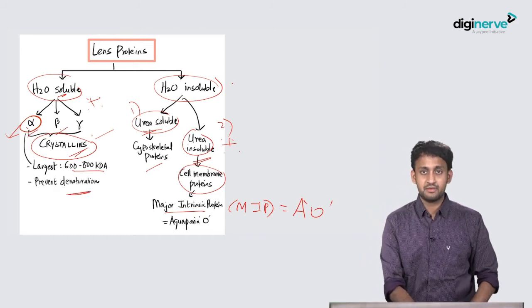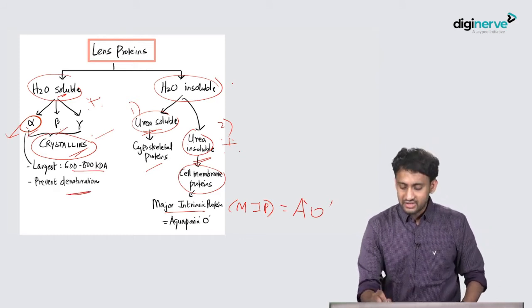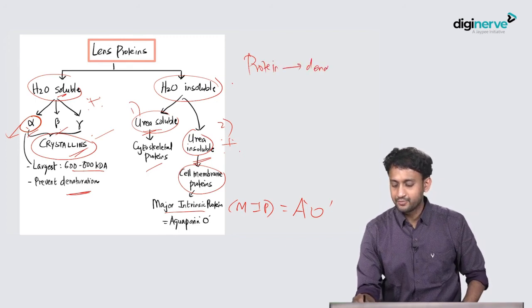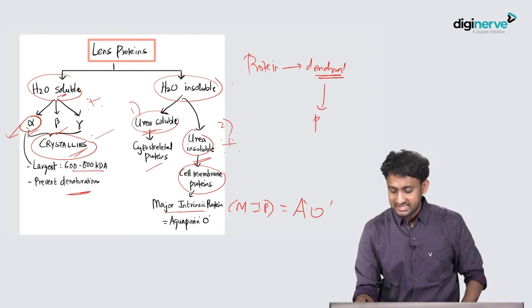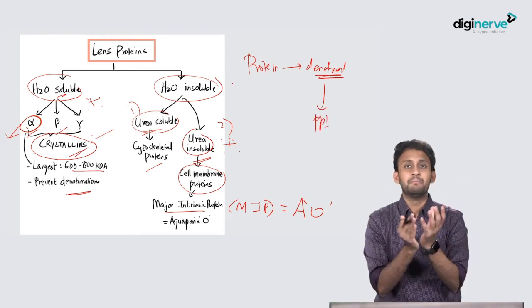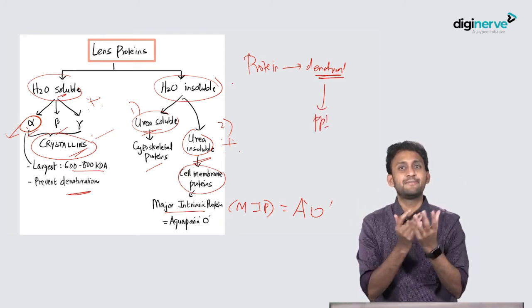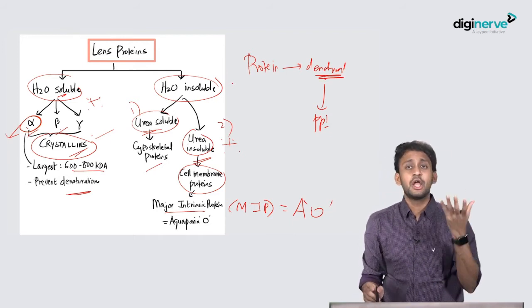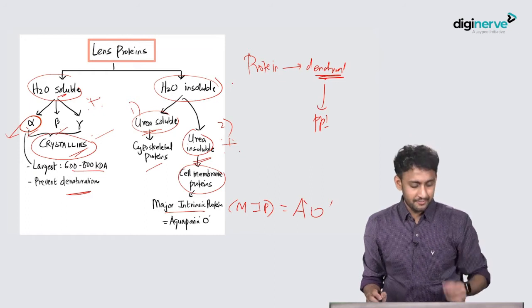When proteins are denaturated, they become precipitated. They form like a clump. When there's precipitation of proteins as a result of denaturation, there is loss of transparency. That is why you have cataract.